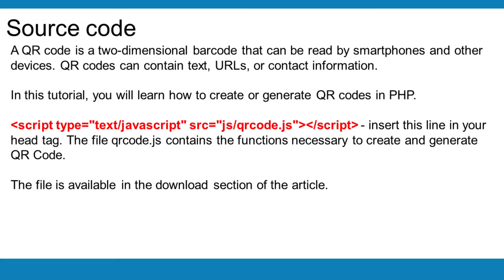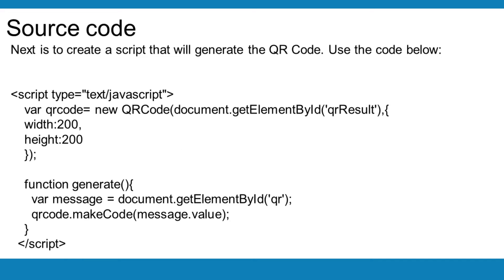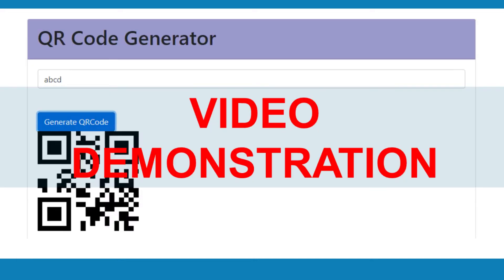Insert this line in your head tag. The file crcode.js contains the functions necessary to create and generate QR codes. The file is available in the Downloads section of the article. Next, create a script that will generate the QR code. Use the code below. Watch the video demo on how to generate a QR code in PHP.